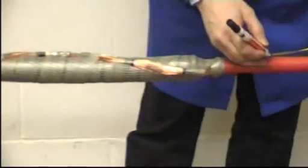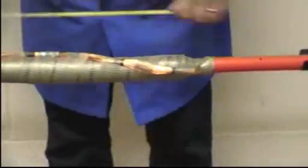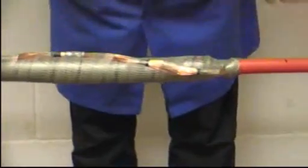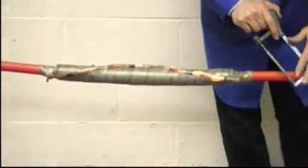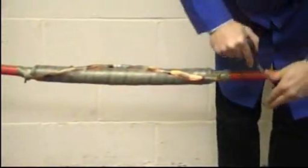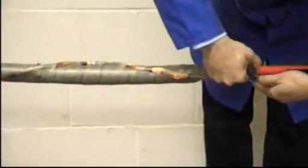Mark out the position where the outer shrink tube will fit. And it's good practice to ensure a good adhesive key by roughening up the insulation.